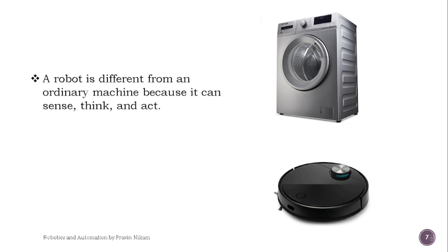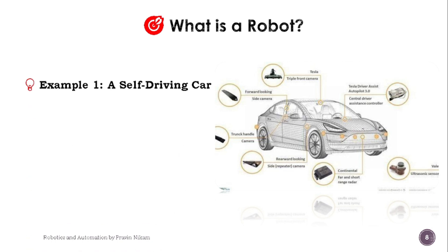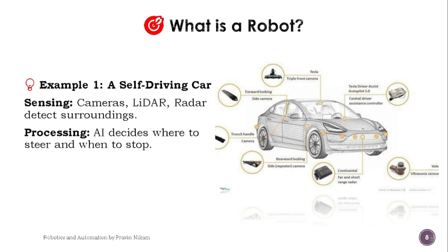A robot is different from an ordinary machine because it can sense, think, and act. For example, a washing machine is not a robot because it follows a fixed cycle, but a robotic vacuum cleaner is a robot because it senses obstacles and makes decisions on its own. Another example is a self-driving car: cameras, lidar, and radar detect the surroundings, AI decides where to steer and when to stop, and motors drive the car.